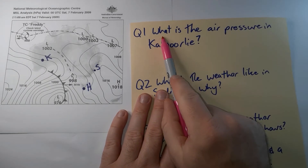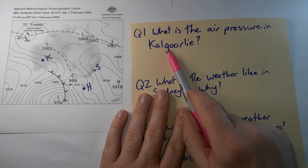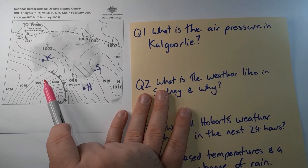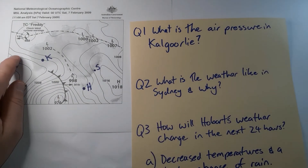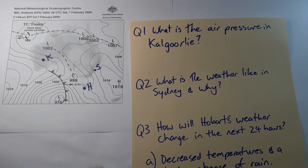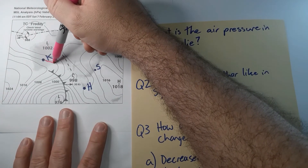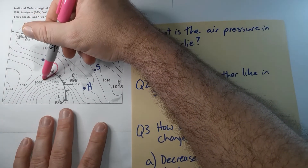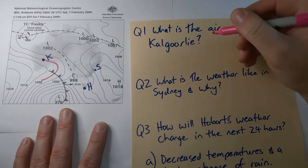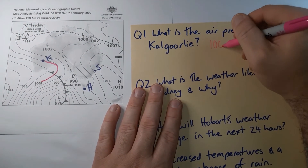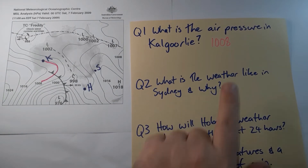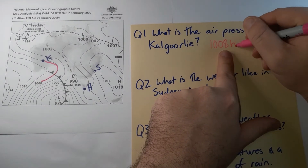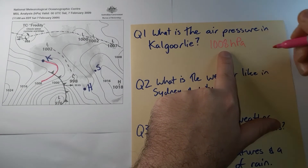Question one: What is the air pressure in Kalgoorlie? I've labelled Kalgoorlie with a K on the map. I can see it sits on a line — if I follow that line around I eventually come to the number 1008. If I left my answer like that I might not get the marks, so I make sure to include the unit of measurement: hectopascals.